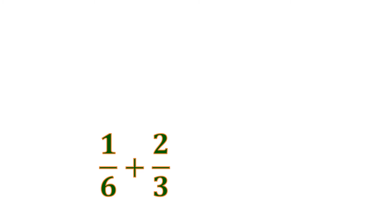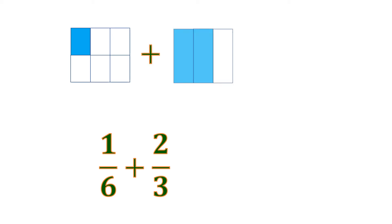Let us visualize. We have 1 sixth — 1 shaded part out of 6 — plus 2 thirds, or 2 shaded parts out of 3. Now we cannot combine these yet because they don't fit with each other. They must have the same number of cuts or boxes.